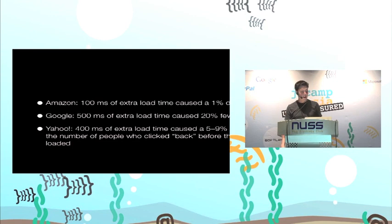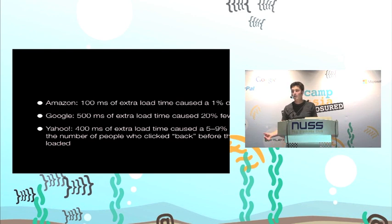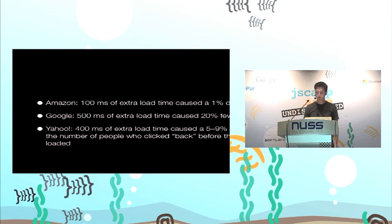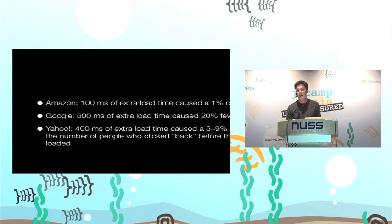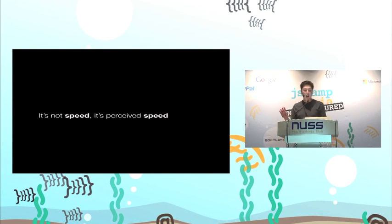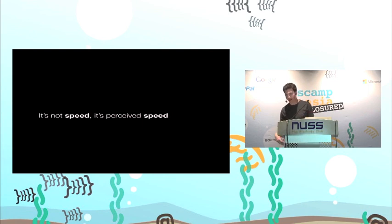Here are three companies — Amazon, Google, Yahoo — that all have their revenues directly tied to the speed of their interfaces, and they know this, so they do a lot of testing. Amazon: 100 milliseconds of extra load time causes a 1% drop in sales. Not much you may think, but for Amazon's size that's huge. And the key thing here: it's not speed actually, it's perceived speed. As developers, this gives us a bit of wiggle room.